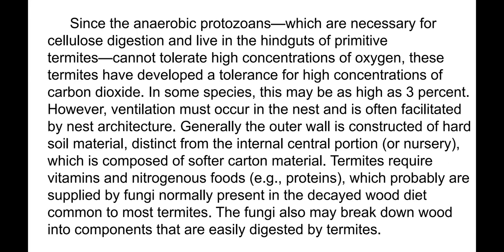Since the anaerobic protozoans necessary for cellulose digestion live in the hindguts of primitive termites and cannot tolerate high concentrations of oxygen, these termites have developed a tolerance for high concentrations of carbon dioxide — in some species as high as 3% CO₂ in the atmosphere, which is very high compared to the normal 400 parts per million. Ventilation must occur in the nest and is often facilitated by nest architecture.